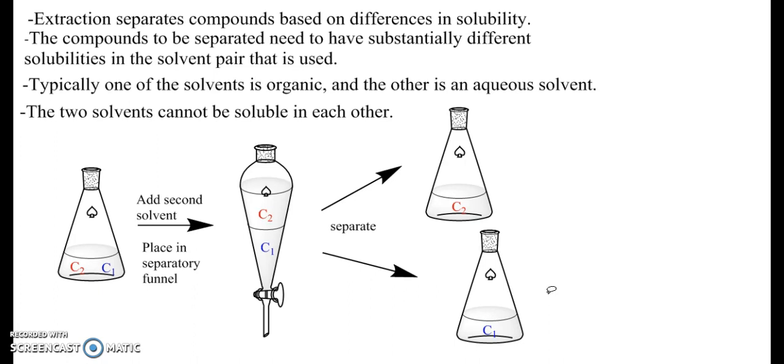Now this is definitely a simplification of what happens, because almost never in the course of one extraction cycle do you end up with a hundred percent of one compound in one layer and a hundred percent of the other compound in another layer. Typically what you end up with is enrichment of the two compounds in each layer.